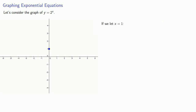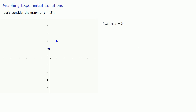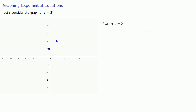If we let x equal 1, we find y is 2, and so (1, 2) is on the graph of y equals 2 to the x. If we let x equal 2, y is 4, and so (2, 4) is on the graph.